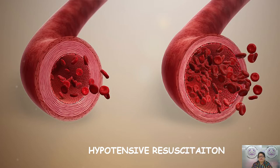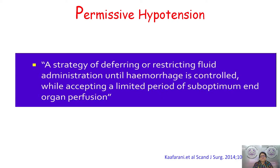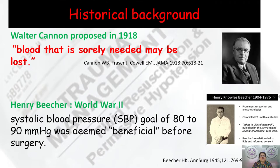Regarding hypotensive resuscitation: most of us would like to push blood toward a vasoconstricted patient, but the principles of damage control resuscitation actually dictate a vasodilated state — an apparent oxymoron. Permissive hypotension is defined as a strategy of deferring or restricting fluid administration until hemorrhage is controlled, while accepting a limited period of suboptimal organ perfusion. This concept came from Walter Cannon, who proposed that injecting fluids before the surgeon identifies the bleeding source may cause you to lose blood that is sorely needed.